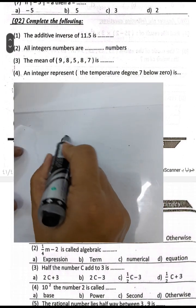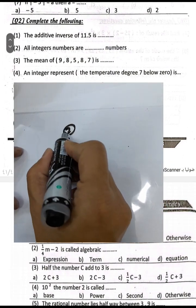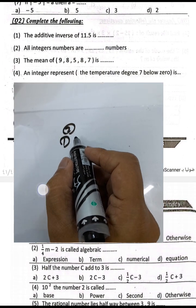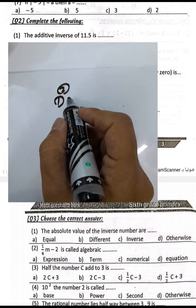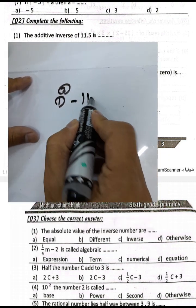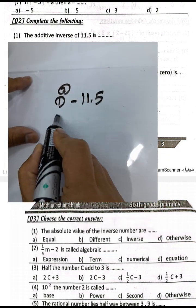Number two: complete the following. The additive inverse of eleven point five will be negative eleven point five.